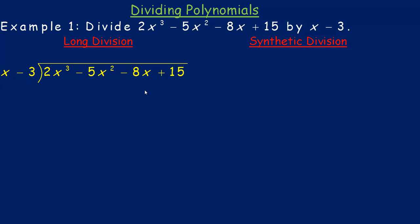The first thing you do in long division with algebraic expressions is take the highest power of x that you're dividing by and divide it into the highest power of x in your polynomial. So you basically take 2x cubed and divide it by x. That would be 2x squared, so we put 2x squared on top. You line it up above its like terms — we put it above the negative 5x squared, or the spot where the x squared term would be.